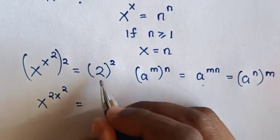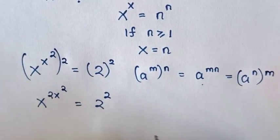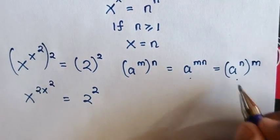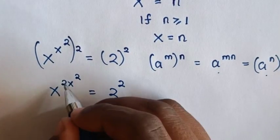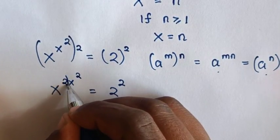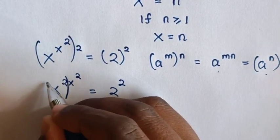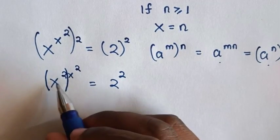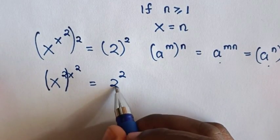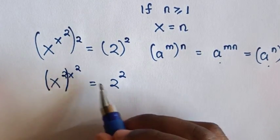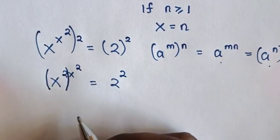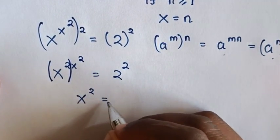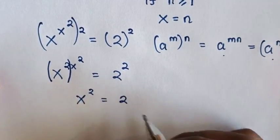Then this is equal to 2 power of 2. Next step, we will apply brackets. So in here, we will apply this bracket. Then we will compare the base: x power 2 is equal to 2, and the power: x power 2 is equal to 2. Then our equation will be x power 2 is equal to 2.